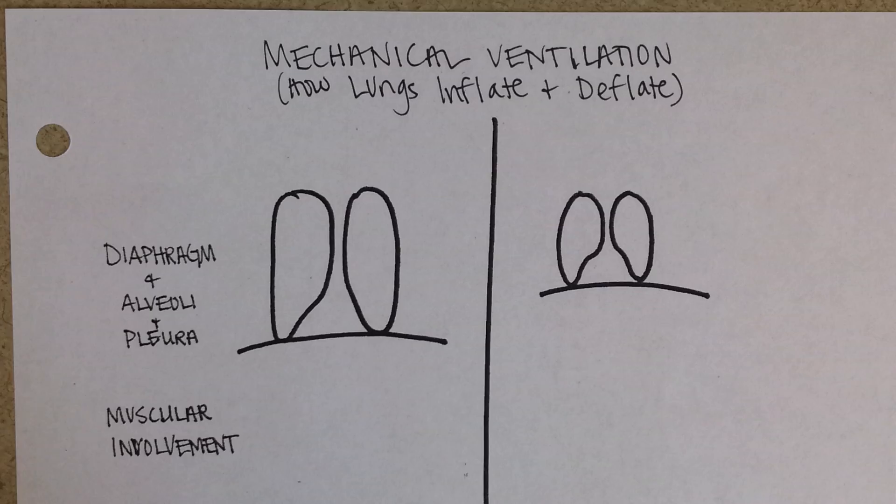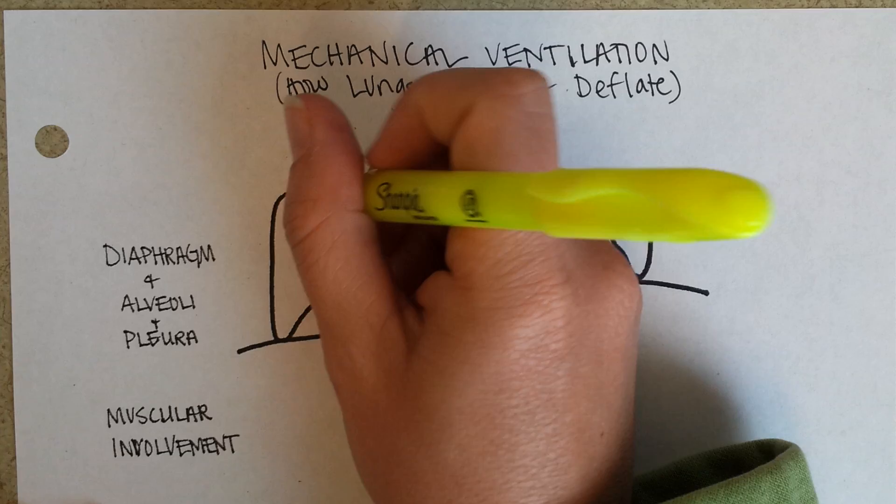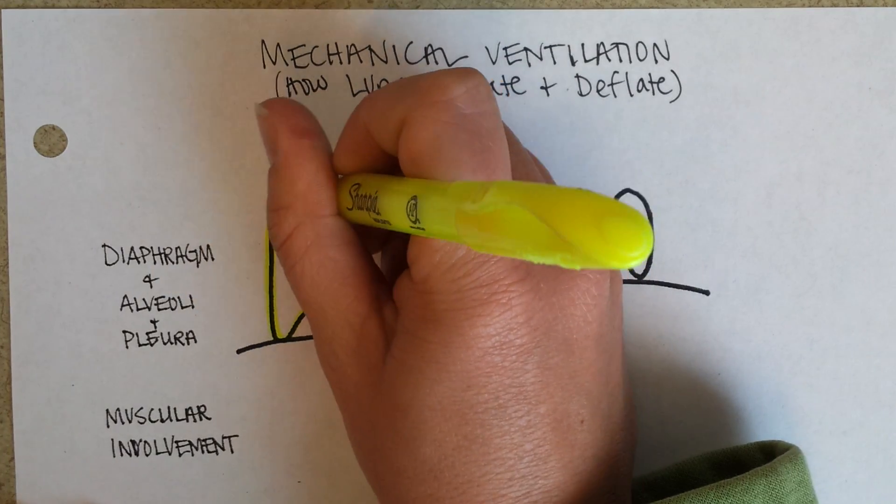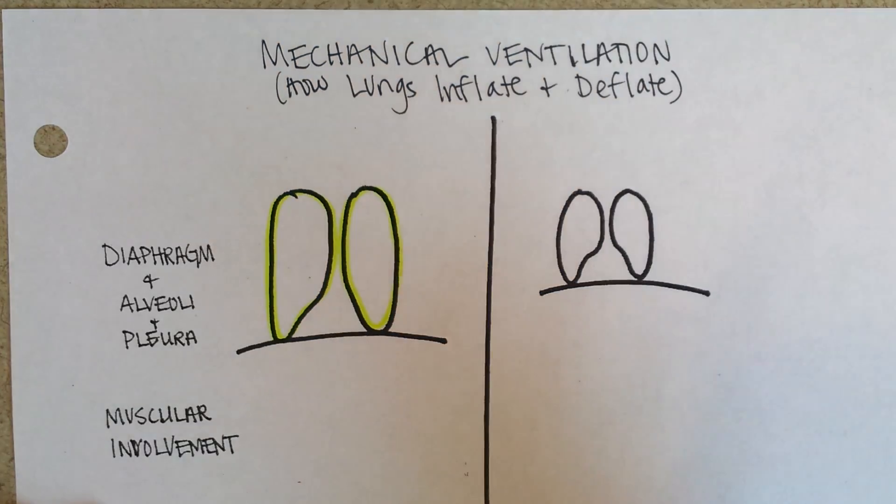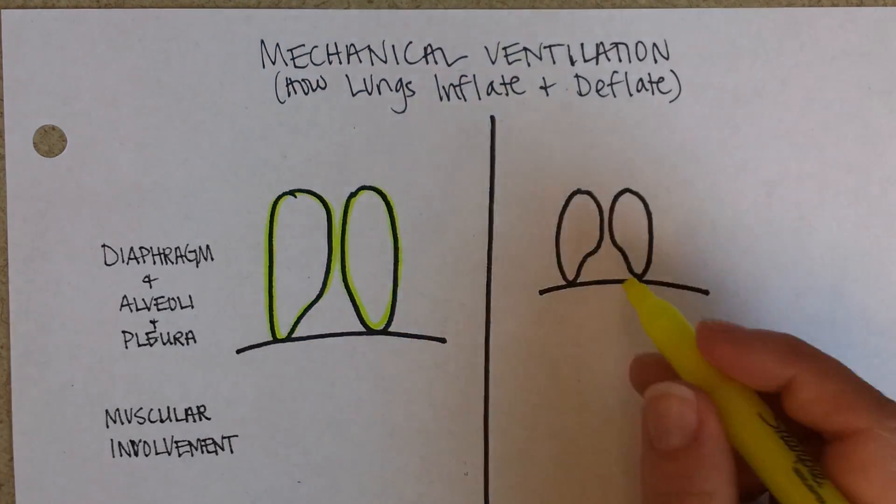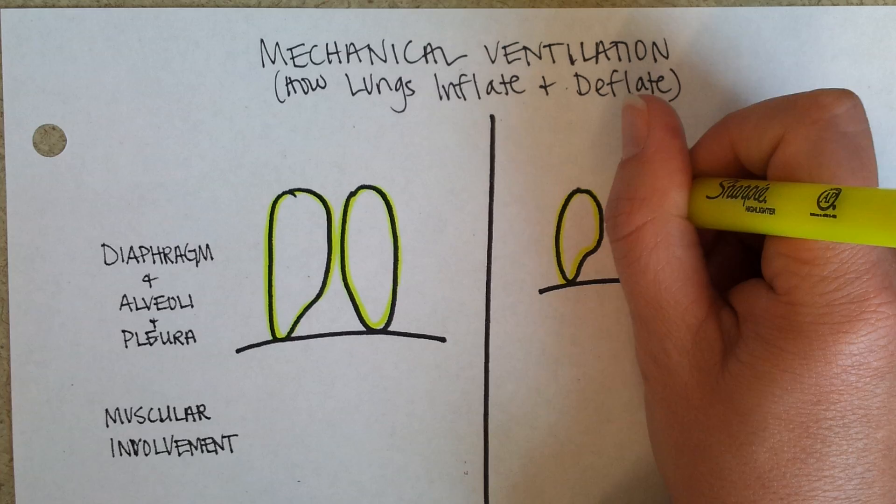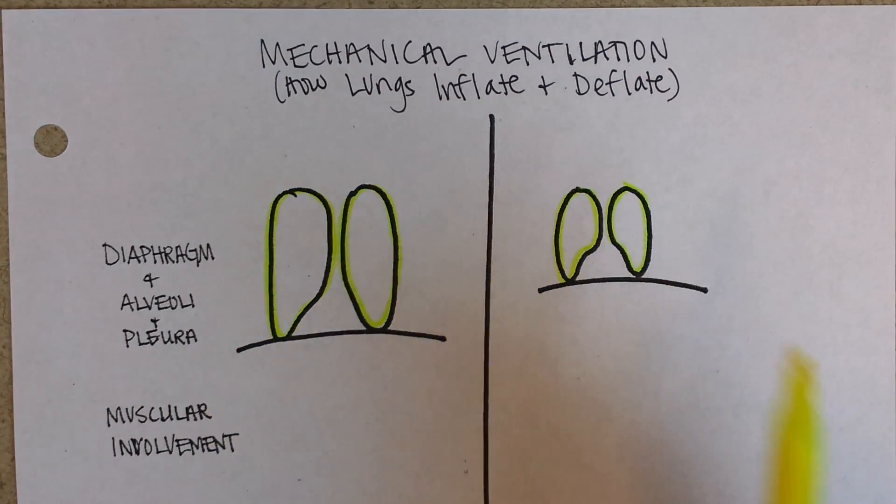I've made some exaggerated pictures. This is a picture of the lungs at the end of a big inhalation. And this is a picture of the lungs at the end of a big exhalation. Not surprisingly, lungs are big here, lungs are small here.